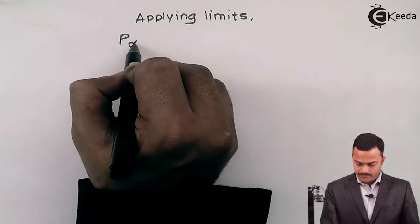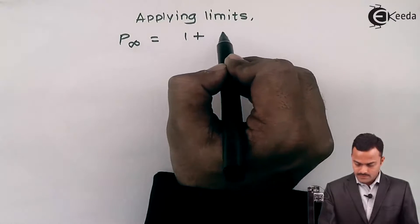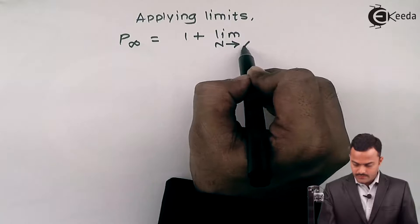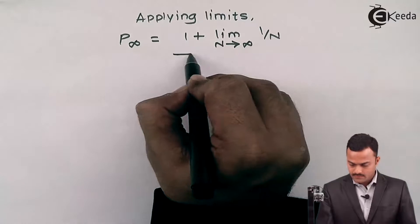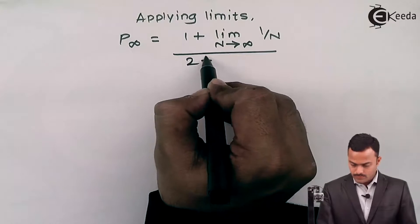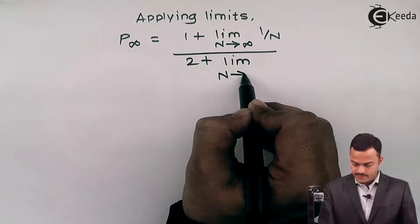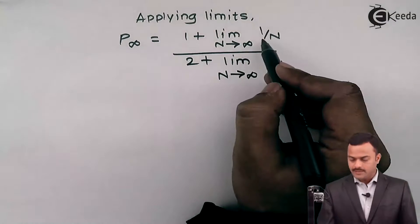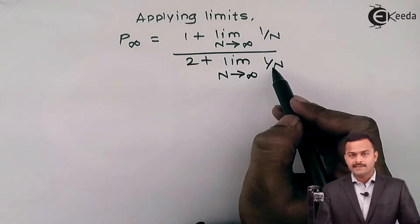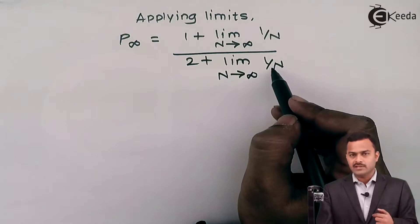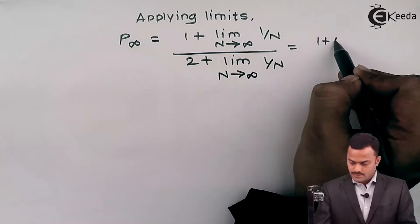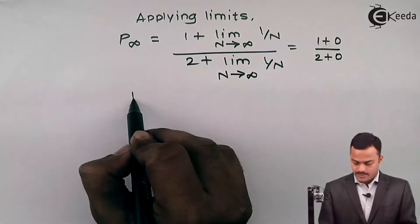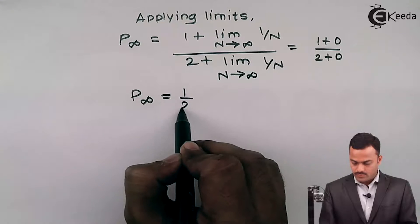Applying the limits, I get P∞ as (1 + limit N→∞ of 1/N) divided by (2 + limit N→∞ of 1/N). Since 1/∞ = 0, this gives (1 + 0) / (2 + 0), so P∞ equals 1/2.